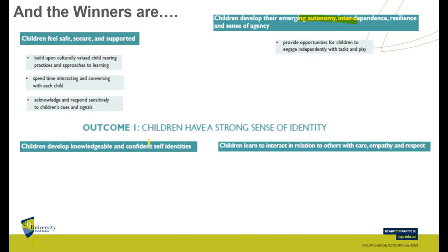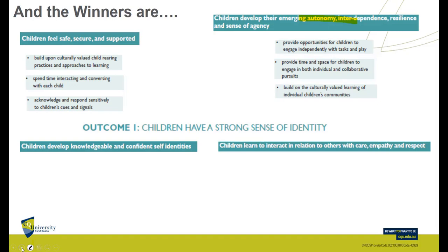This outcome could well be connected to the first E — autonomy, independence, resilience, a sense of agency. Children are becoming active in their learning, so we give them opportunities to engage independently with tasks and with play. Here we're starting to look at how this may map out across the investigative process through science investigations — we provide time and space for both individual and collaborative pursuits.